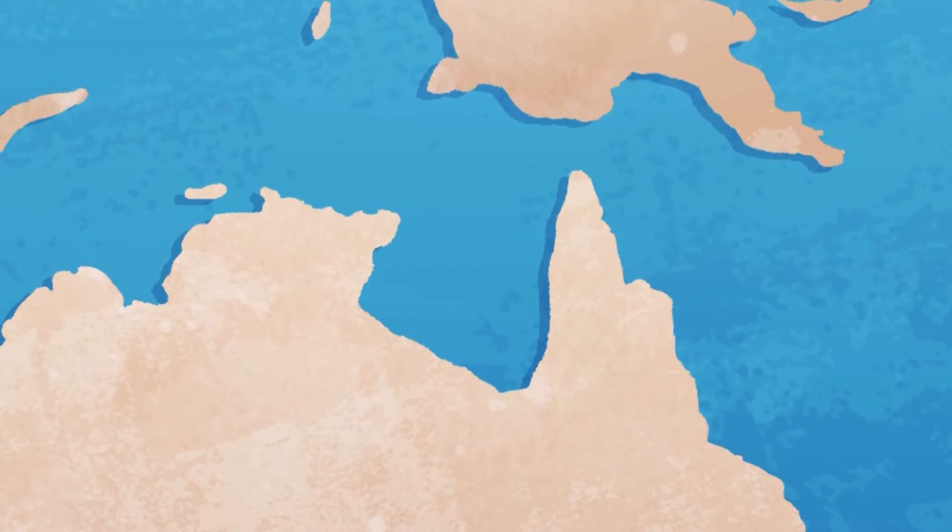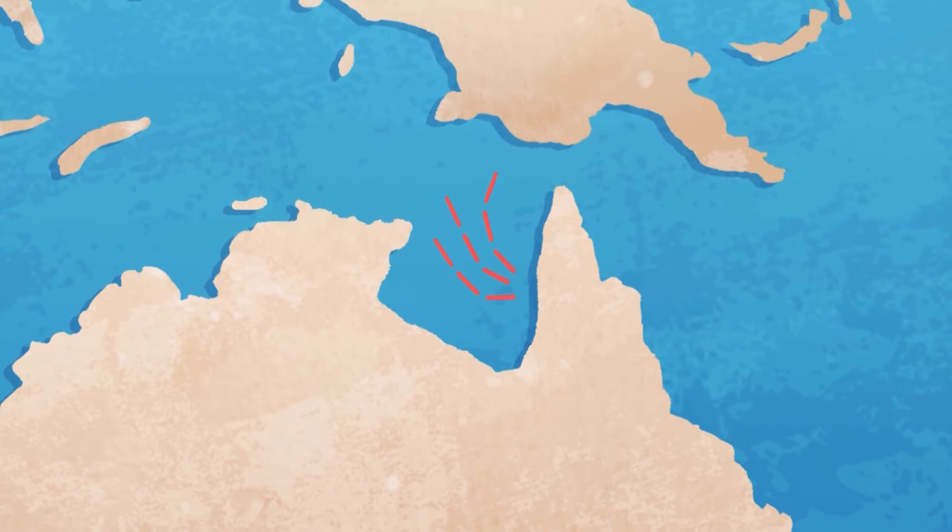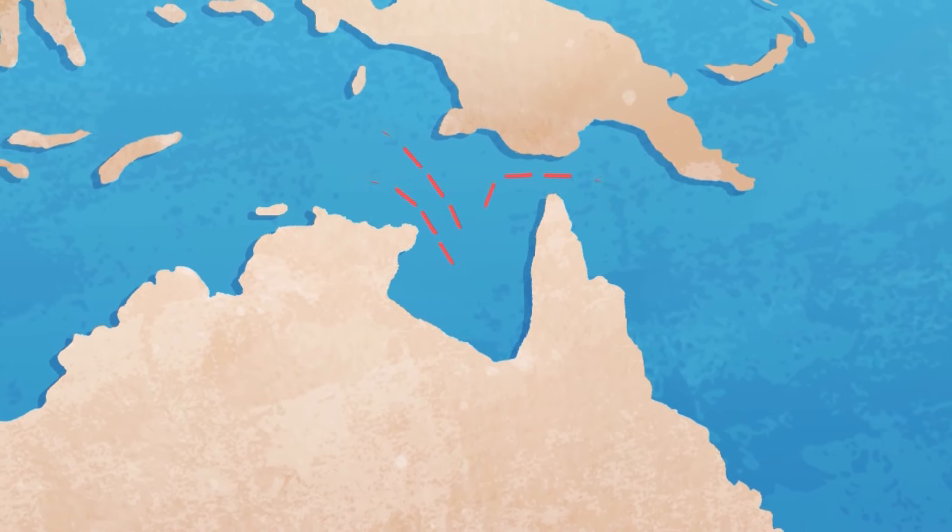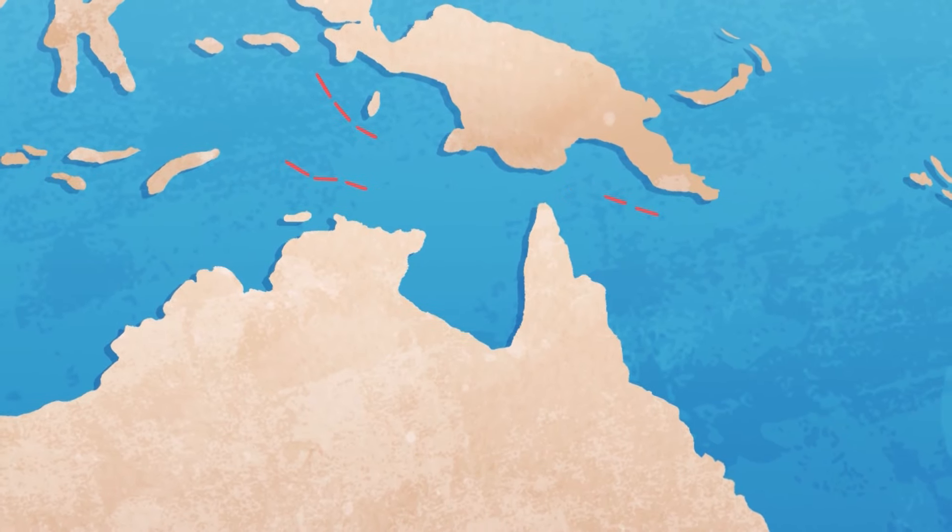Once they reach the sea, the hatchlings begin a swimming frenzy that can last several days until they reach currents that take them far away from the beaches and lurking predators.